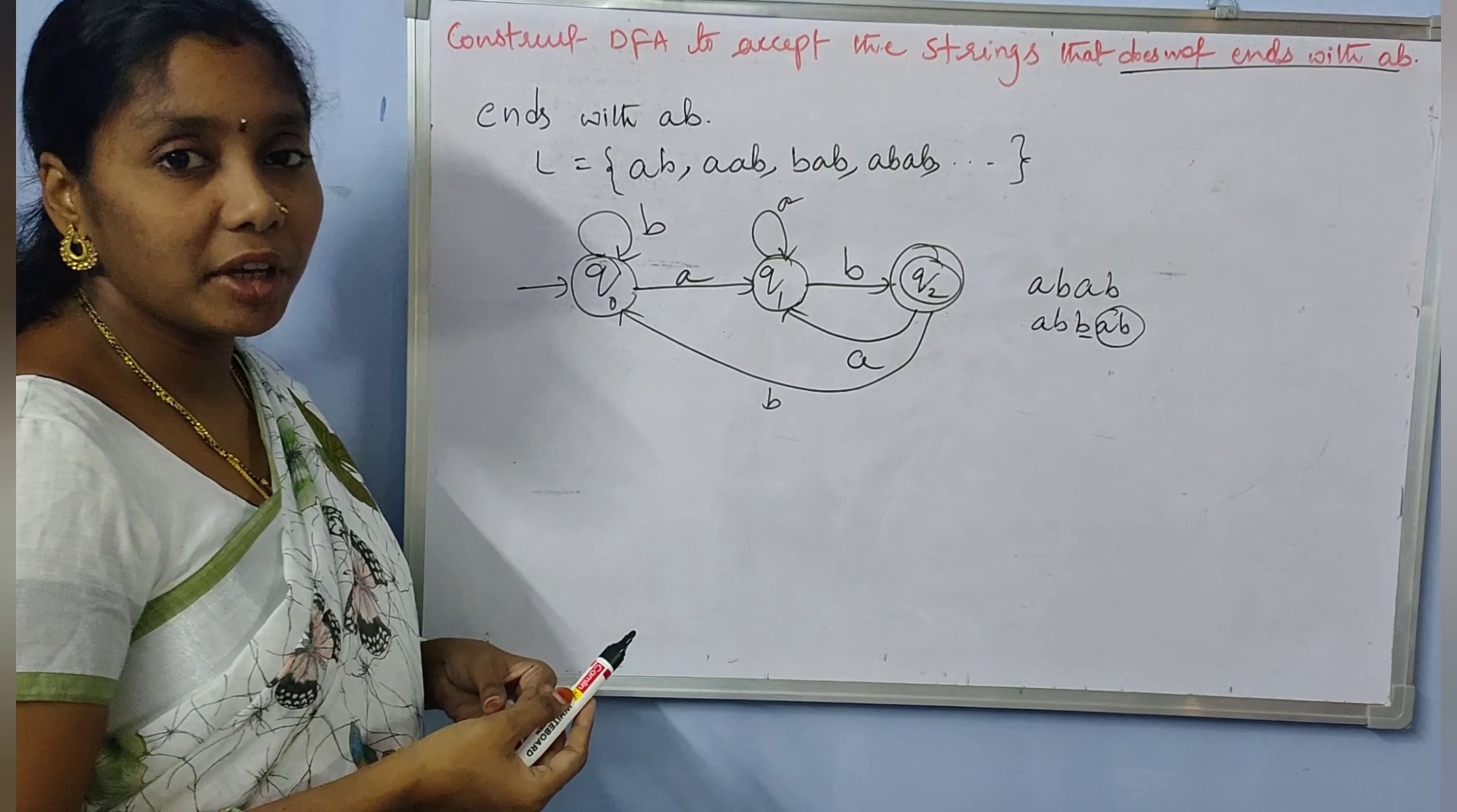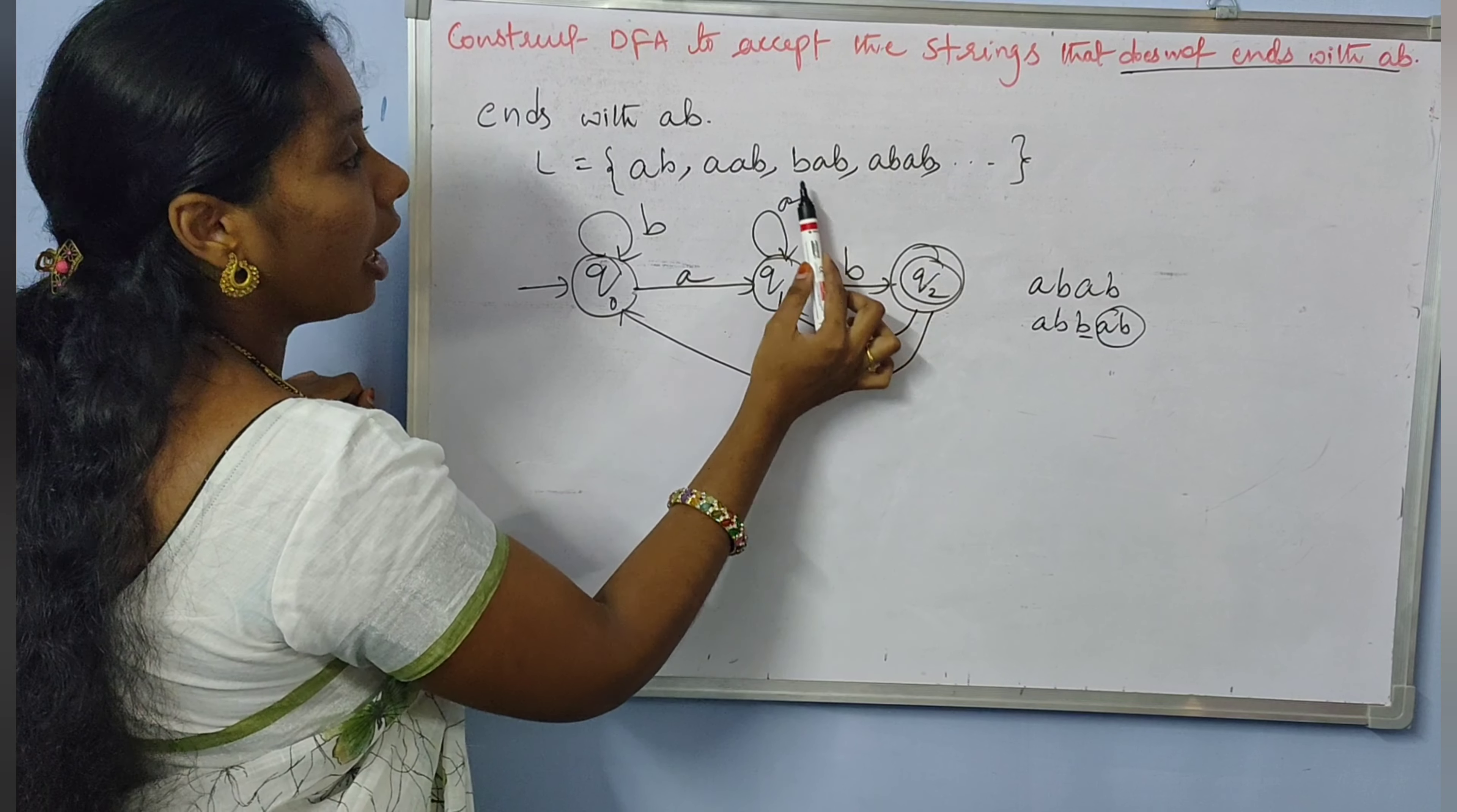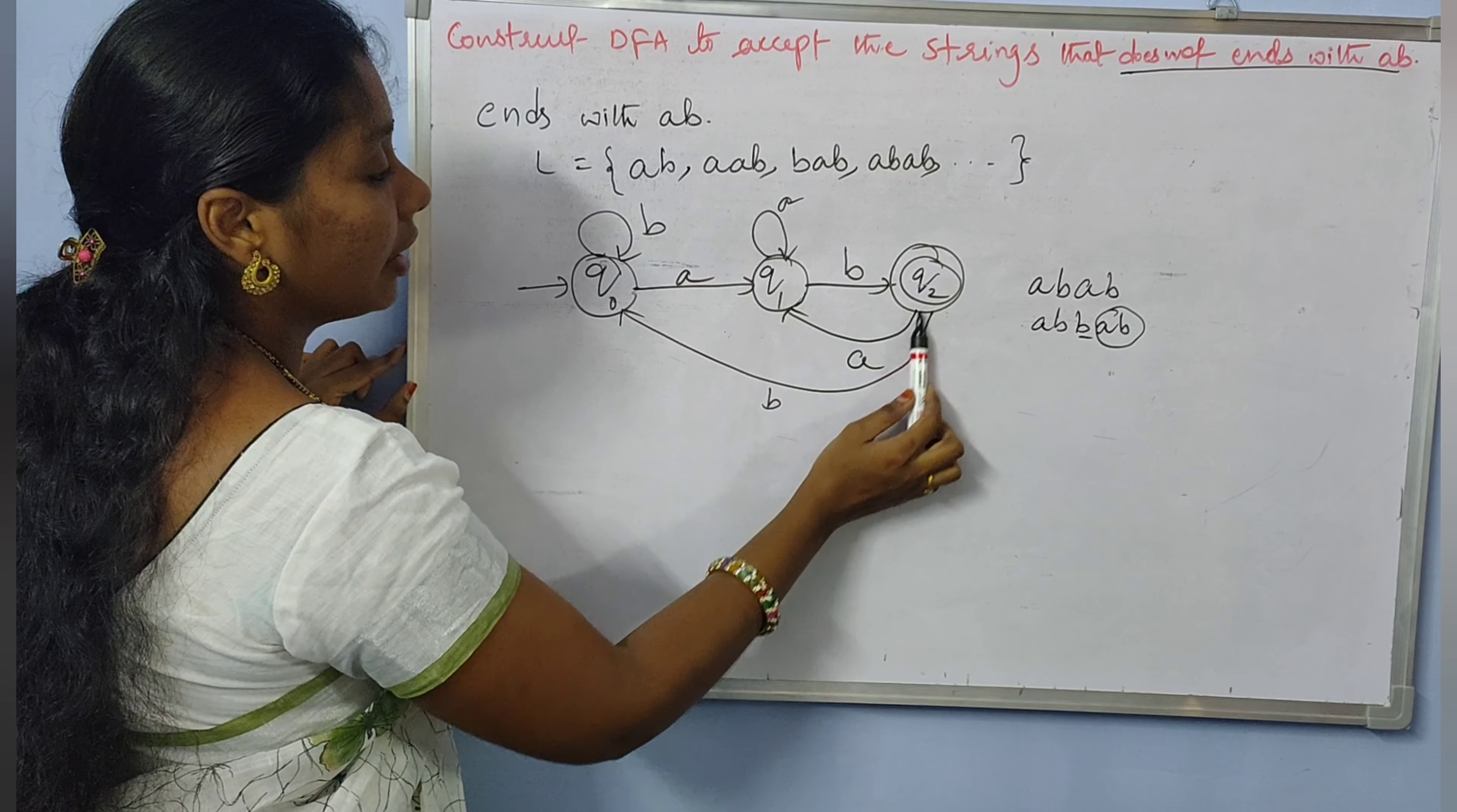So this is the DFA to accept the strings which end with AB. Let's check. AB is accepted, AAB is accepted, BAB is accepted, ABAB is accepted.